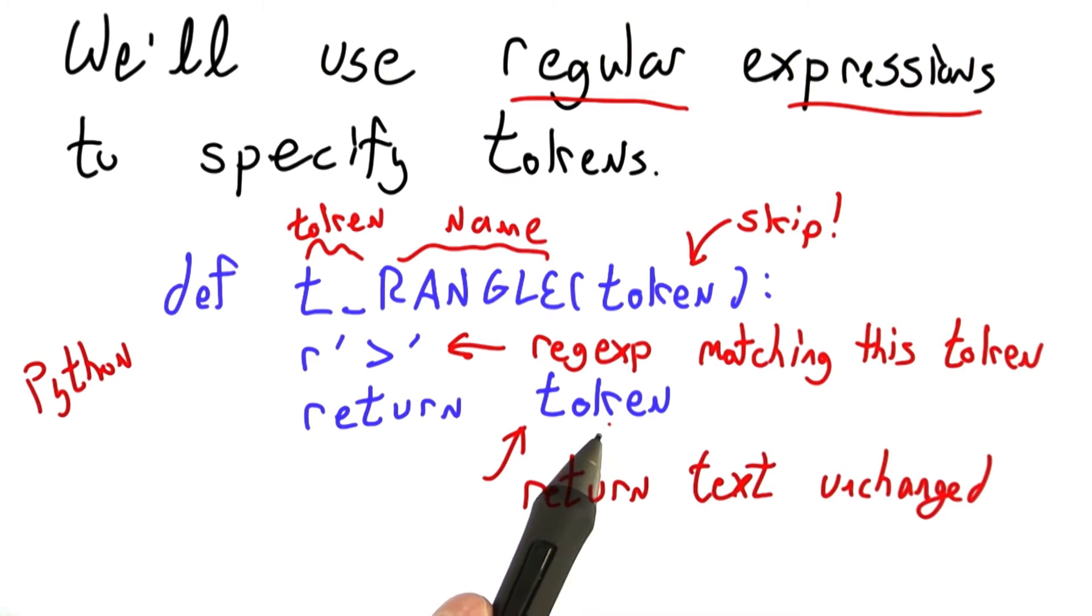And then here, in the last line, we're returning the text of the token unchanged. We could transform it, and you'll see us do that for more complicated tokens like numbers, where maybe we'll want to change the string 1.2 into the number 1.2.